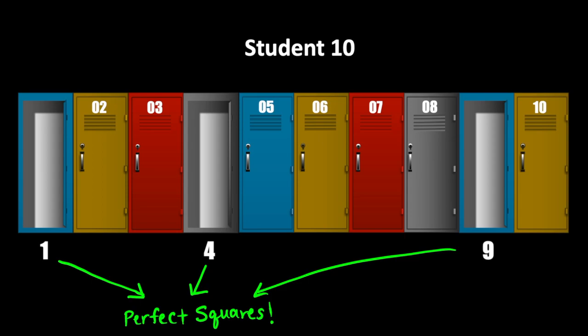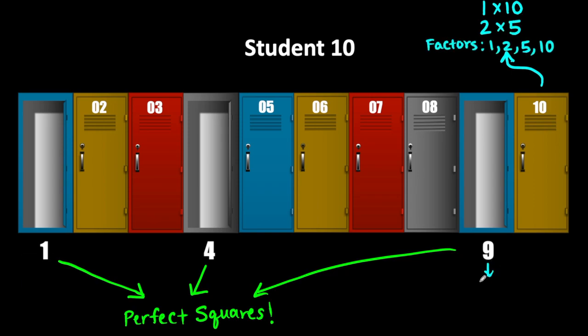They're perfect squares. And what is special about perfect squares? They have an odd number of factors, as opposed to non-perfect squares that have an even number of factors. This is true because each factor of a number has a pair. For example, a number like 10 has factors 1 and 10, and 2 and 5. But for a number like 9, the factors are 1 and 9, and 3 and 3 — so it only has three factors instead of the four that 10 does.